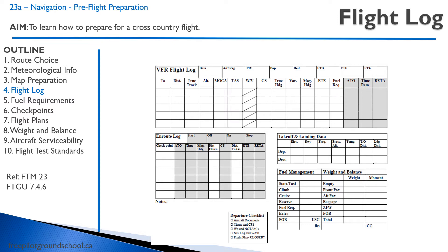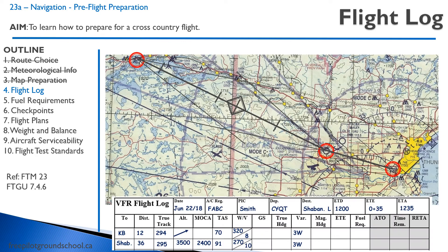For this flight, we'll fill out our flight log — we learned this in our ground school portion. We are going from Kakabeka Falls to Shibandawan. Kakabeka Falls is our set heading point, so we actually depart from Thunder Bay, but the first leg is to our set heading point, Kakabeka Falls, which is 12 miles away.